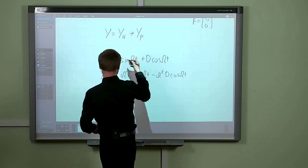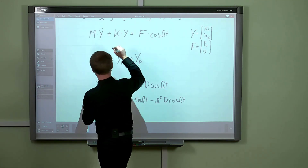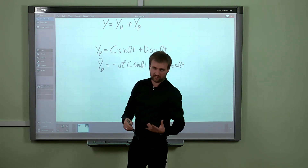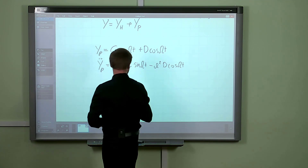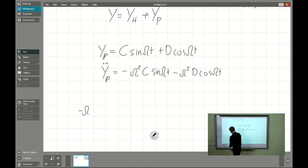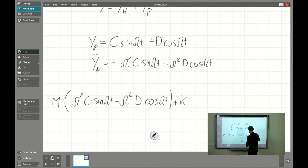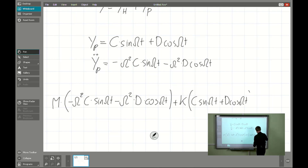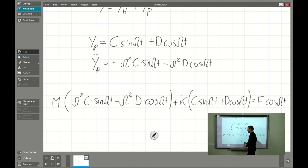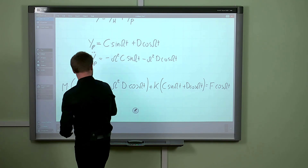We have to compute the second derivative for substitution. It will be minus omega squared times C times sin(omega*t) minus omega squared times D times cos(omega*t), where C and D are the amplitude vectors of the system response. We then substitute the derivatives and the displacement into the governing equation, giving us an algebraic system to find the unknown parameters C and D. After substitution, we have minus omega squared times C times sin(omega*t) minus omega squared times D times cos(omega*t) multiplied by the inertia matrix, plus the stiffness matrix times [C*sin(omega*t) + D*cos(omega*t)], equated to F times cos(omega*t).